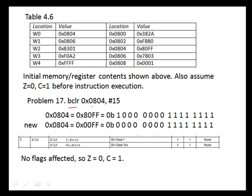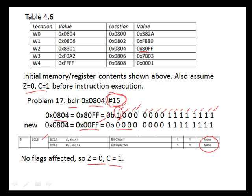Problem 17 says bit clear memory location 0x804, bit number 15. This is a word operation, so we look at the contents of location 0x804, which is 0x80FF. Writing that in binary, we clear bit 15, the most significant bit, to 0. The remaining bits are unaffected, so writing back in hex, the new value of memory location 0x804 is 0x00FF. Looking at the table, bit clear affects none of the flags, so the zero flag remains 0 and the carry flag remains 1.